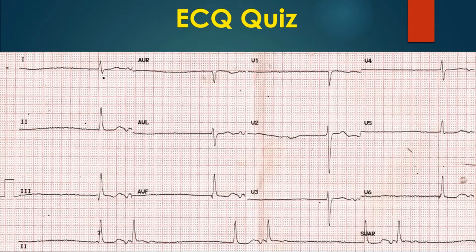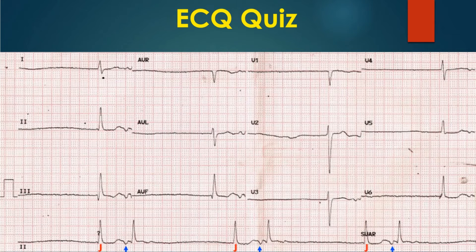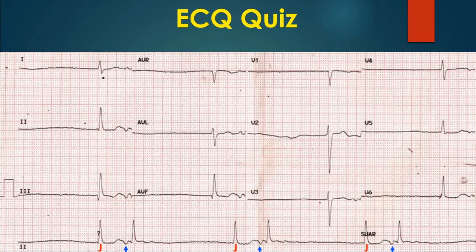Here is another ECG with bigeminal rhythm. What is the diagnosis? The beats marked as J are junctional escape beats occurring at a slow rate. They are followed by inverted p-waves in inferior leads prior to the next QRS complex, marked by the blue upward arrows. These beats could be either beats originating from the low atrium, i.e., coronary sinus rhythm, or from the high junction.